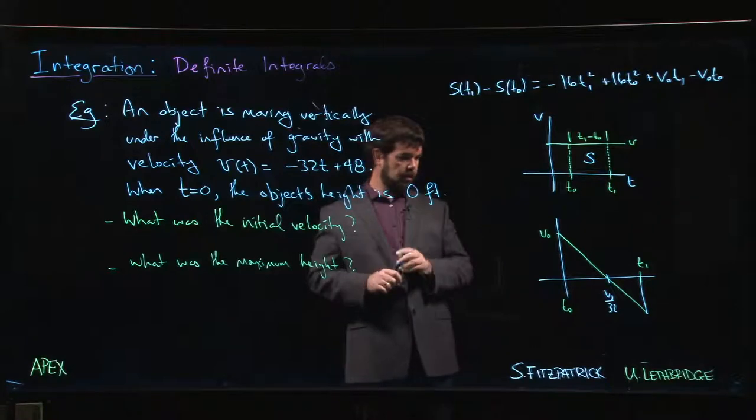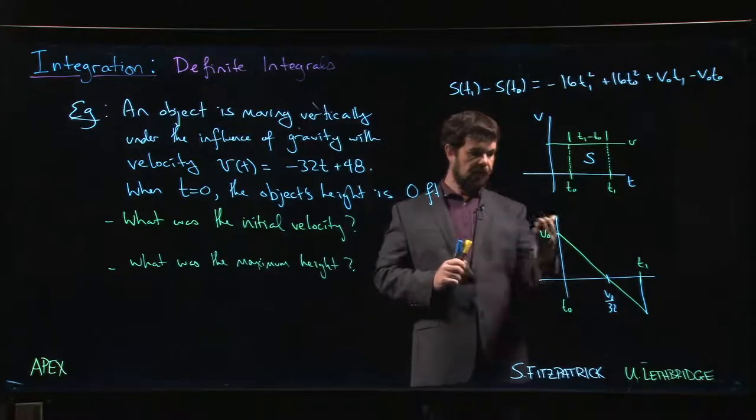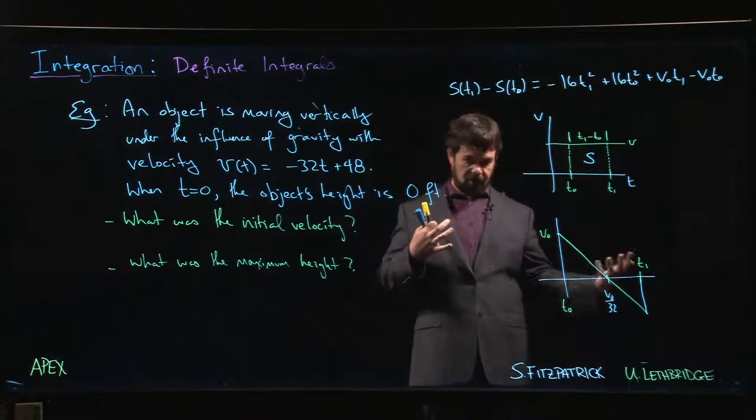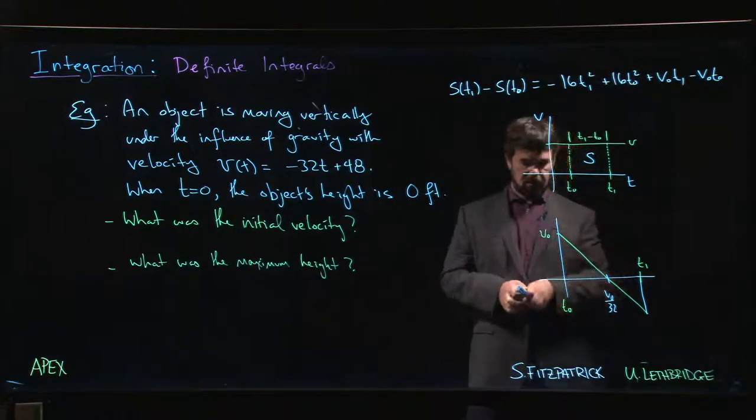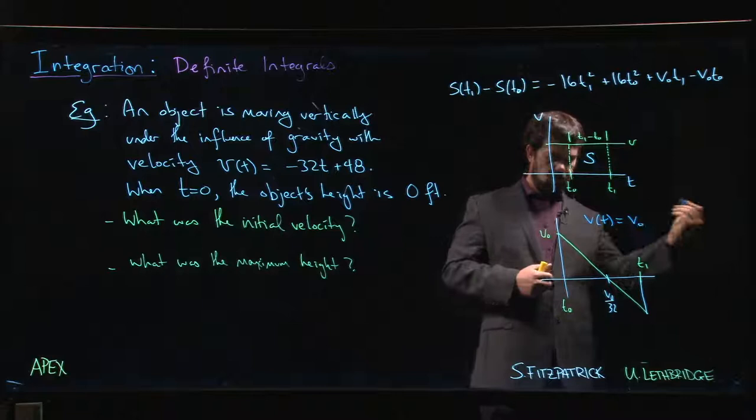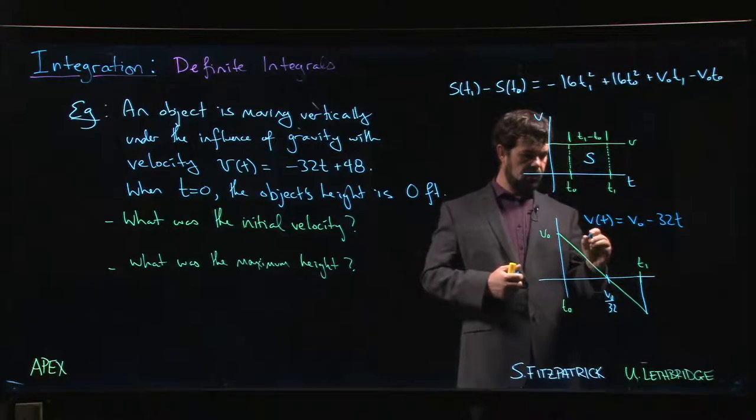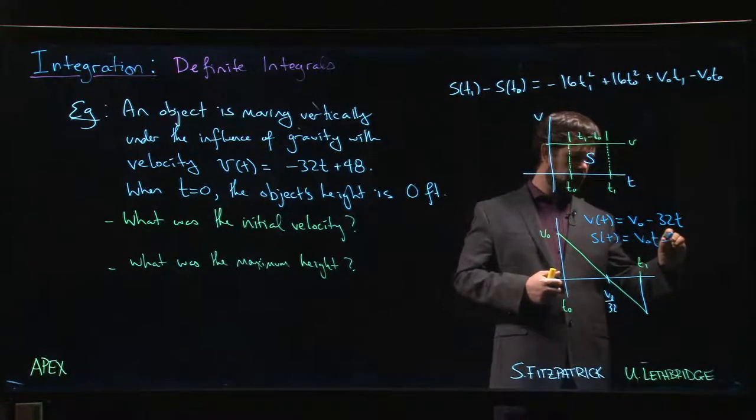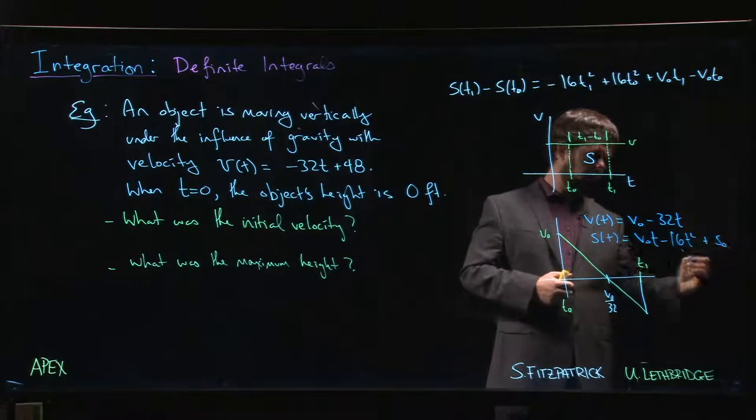In the last video we left off with an object falling under the influence of gravity with some initial velocity. We're trying to tie position in with area, connecting the fact that position is the anti-derivative of the velocity. So if v(t) is the initial velocity minus the acceleration, then our position should be the anti-derivative: v₀ times t minus 16t² plus some initial position.